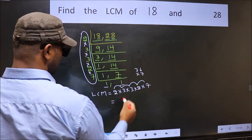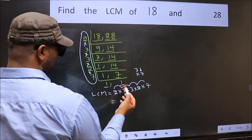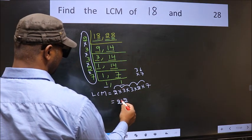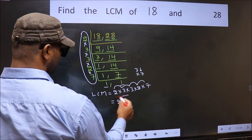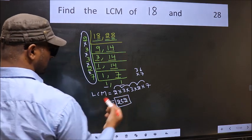7 into 6, 42. 7 times 3 is 21 plus 4, 25. So 252 is our LCM.